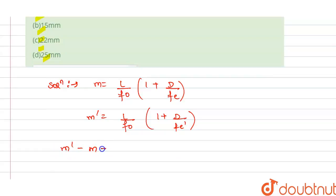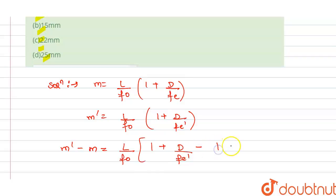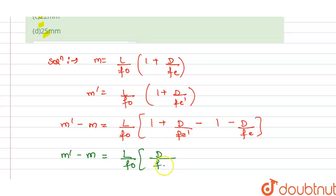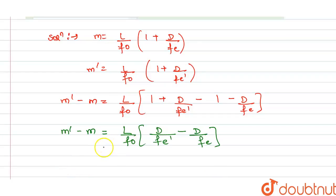Subtracting M from M', with L and f₀ taken as common, we get: M' − M = (L / f₀) × [(1 + D / fₑ') − (1 + D / fₑ)]. The ones cancel out, giving M' − M = (L / f₀) × D × (1/fₑ' − 1/fₑ).